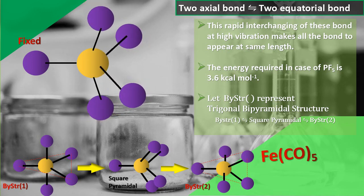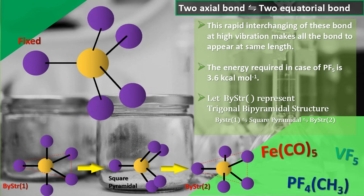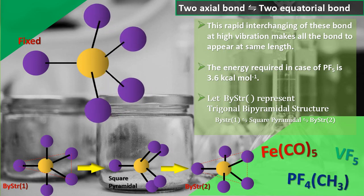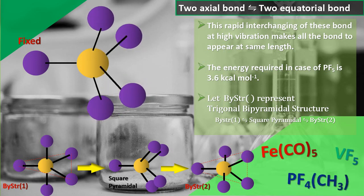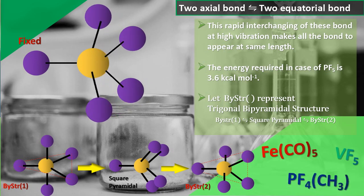Other examples of compounds that undergo Berry Pseudo rotation are iron carbonyl, vanadium fluoride, and methyl phosphorous tetrafluoride.